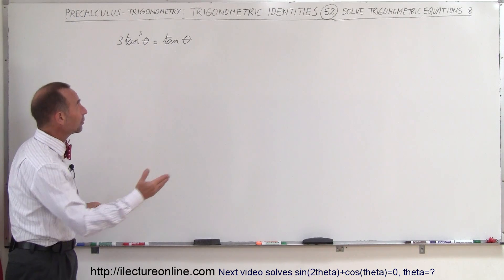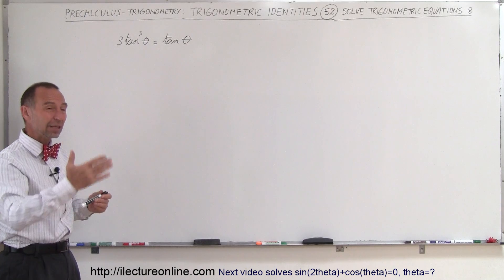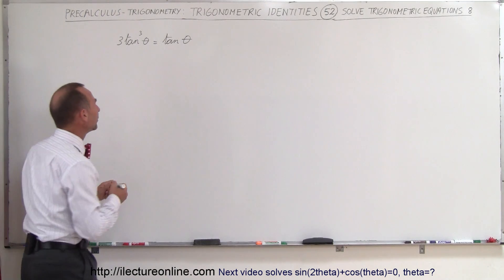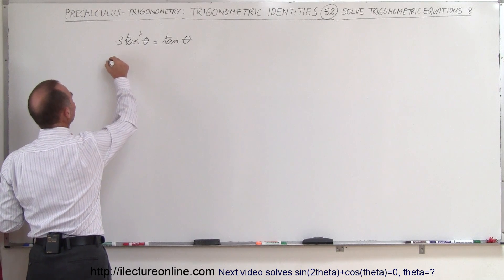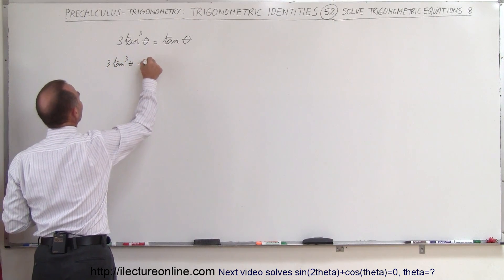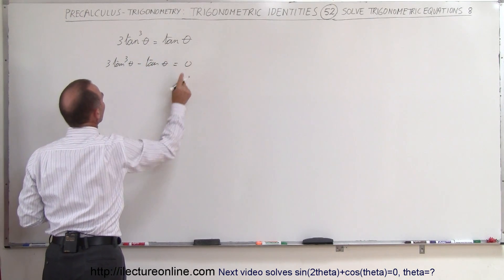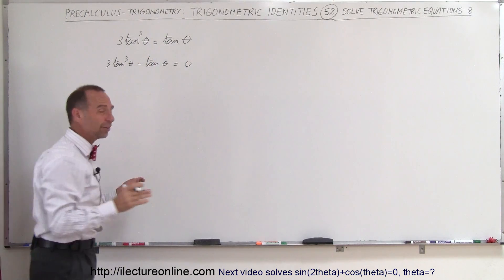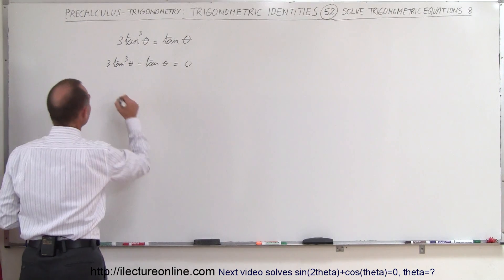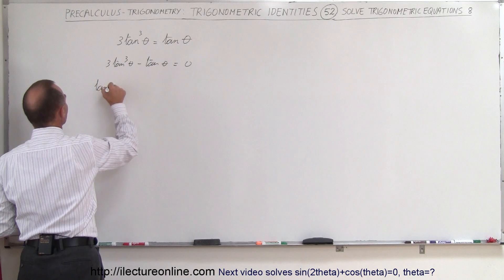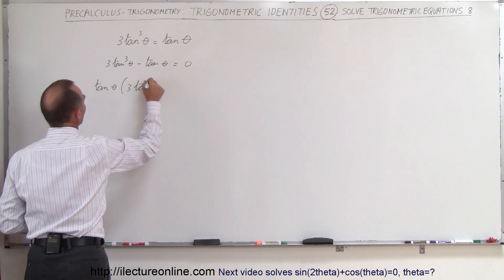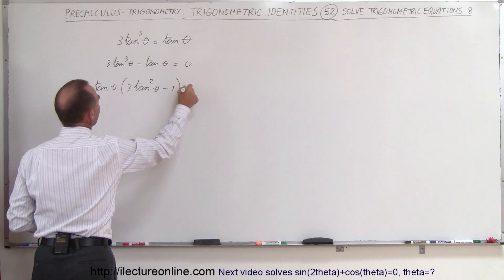The way to do that is to move the tangent of theta to the left side, set equal to zero, then come up with some product. So three times the tangent cubed of theta minus the tangent of theta is equal to zero. Now that we have the left side set equal to zero, we factor something out — we factor out the tangent of theta — so: tangent of theta times (3tan²θ − 1) equals zero.